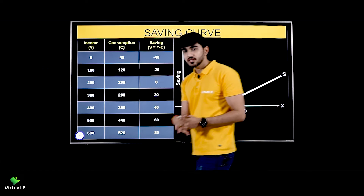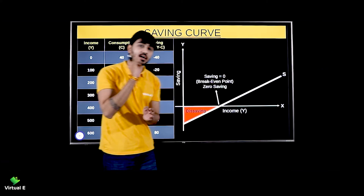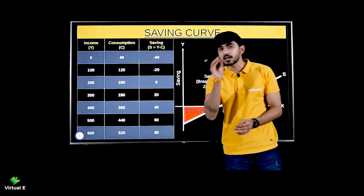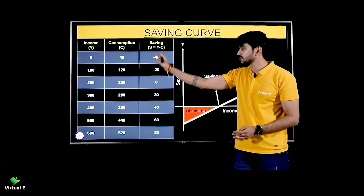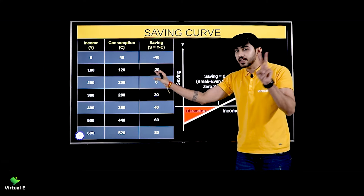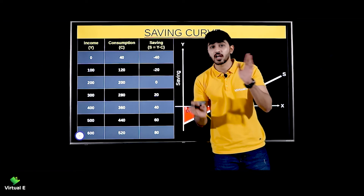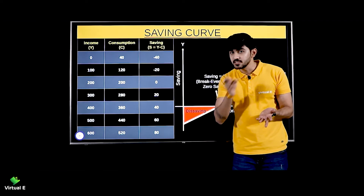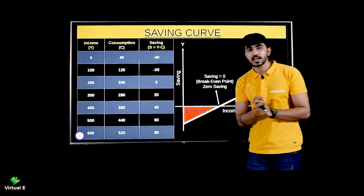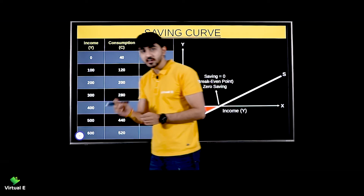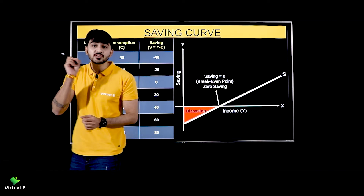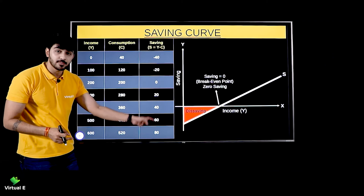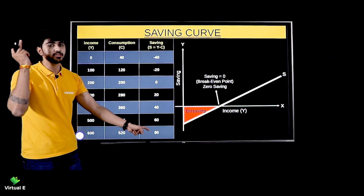When do these three phases occur? The first phase occurs when your consumption is more than your income — then your savings will be negative. The second phase is when income is equal to consumption — when income equals consumption, savings will be zero. The third phase is positive savings — that means your income is more than your consumption, so ultimately your savings will be positive. Simple.